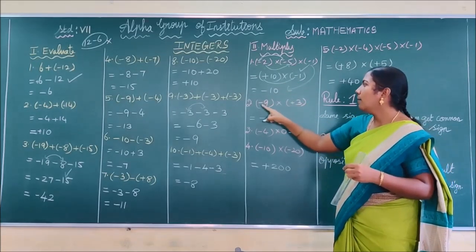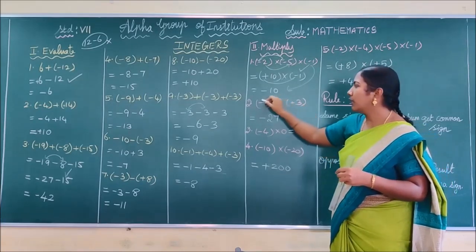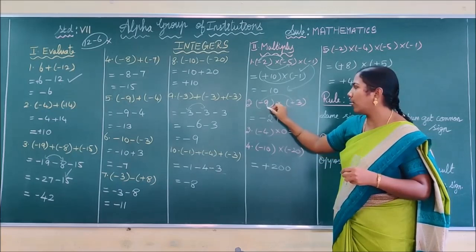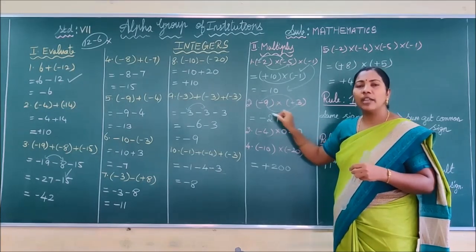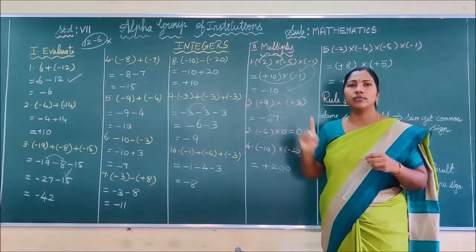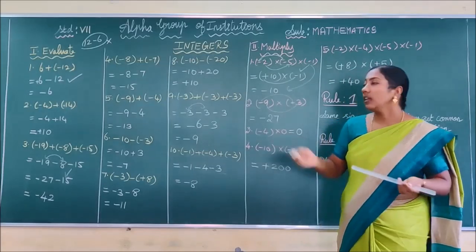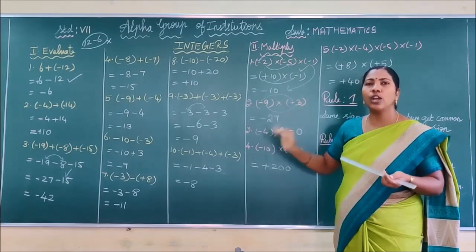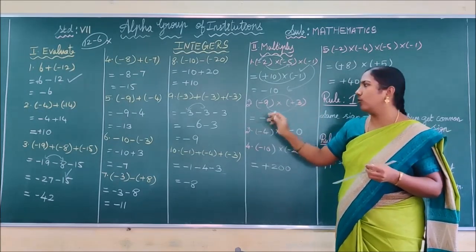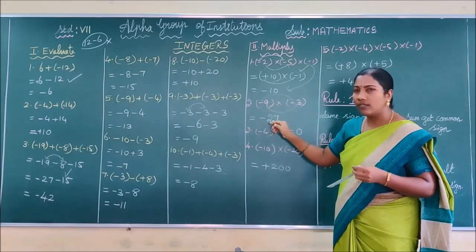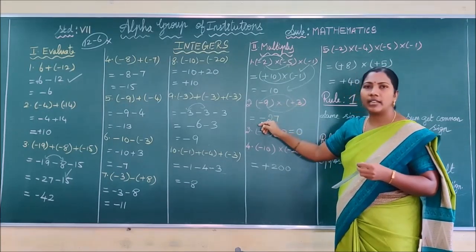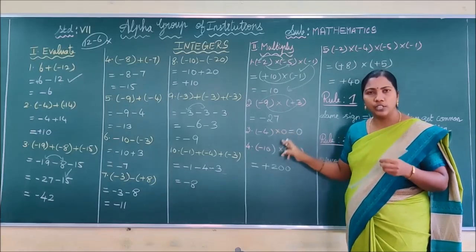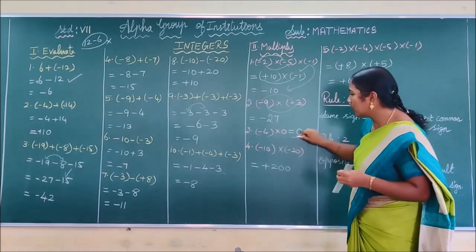See the next: minus 9 into plus 3. First multiply the symbols: minus into plus gives minus. Then multiply the values: 9 threes are 27. So the answer is minus 27. Many of you wrote 9 plus 3 = 12, but how can you add in a multiplication process? This is multiplication — you must multiply the values, not add them. Also, I am insisting: if you multiply any number with 0, you get the answer 0.